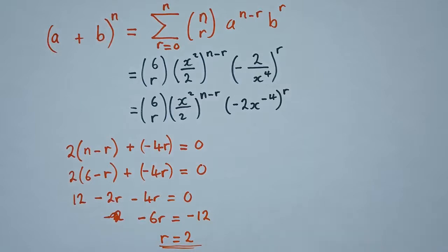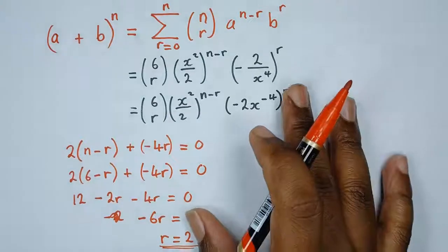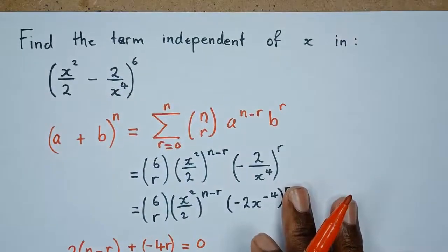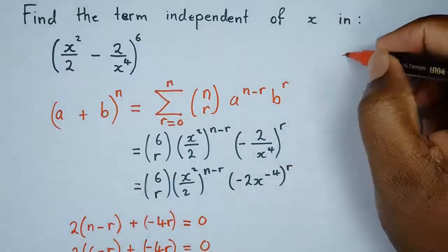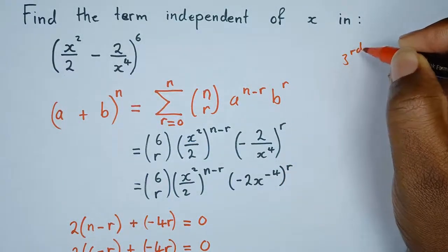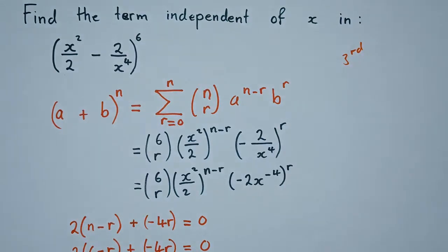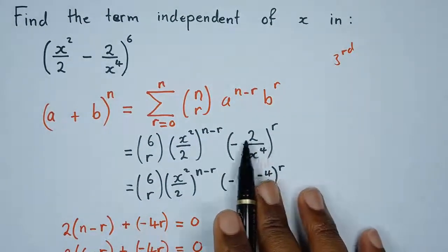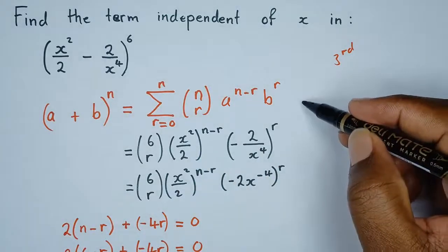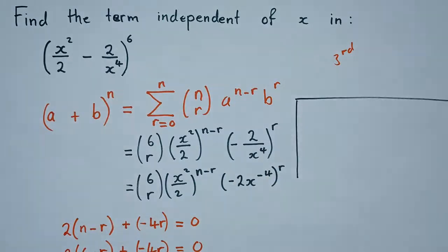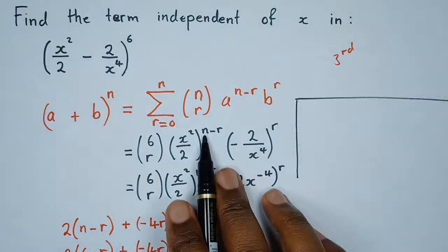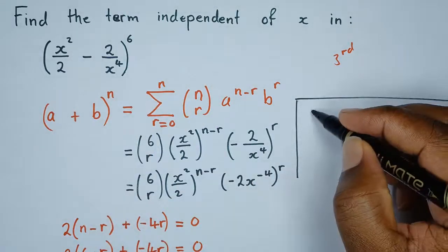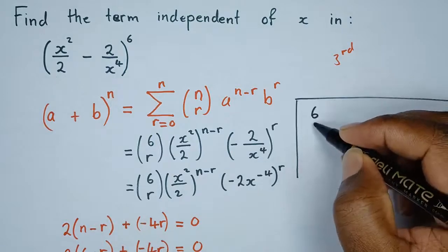After finding r, how do we determine the term independent of x? If asked to state which term it is, you say the third term is independent of x. To show this, we go back to our expression and substitute: n is 6, r is 2, so we have C(6, 2).